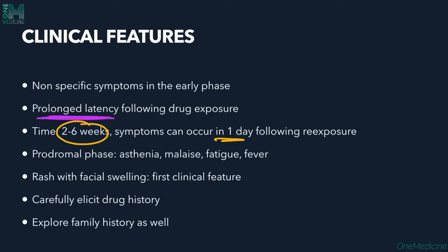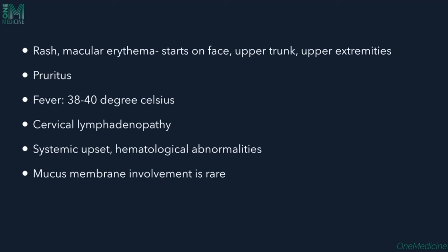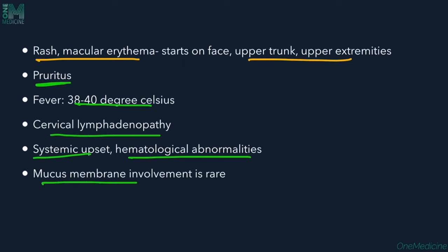In the prodromal phase, patients may have asthenia, malaise, fatigue, and fever. The first clinical feature is a rash with facial swelling. Careful drug and family history must be elicited. The rash begins as macular erythema on the face, then spreads to the upper trunk and extremities, accompanied by pruritus. Fever is around 38–40°C with cervical lymphadenopathy.